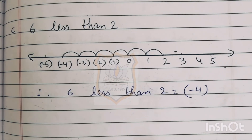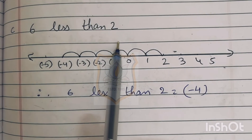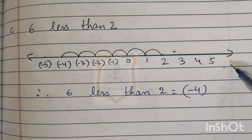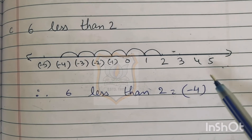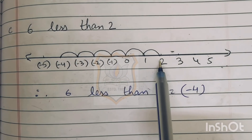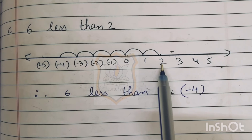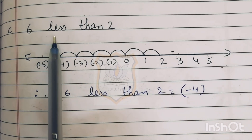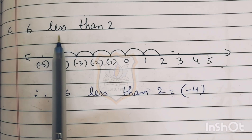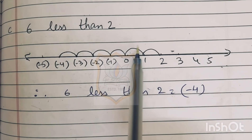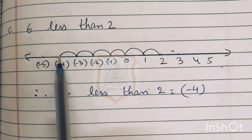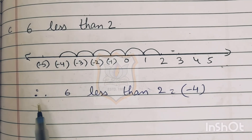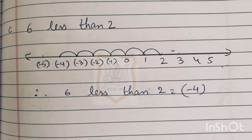For part C: 6 less than 2. Draw a number line, find 2, then move 6 steps towards the left — 1, 2, 3, 4, 5, 6 — and we reach minus 4. Therefore, 6 less than 2 equals minus 4. Part D, students, you have to do by yourself. With this we end today's video and will continue with our chapter in the next video. Thank you.